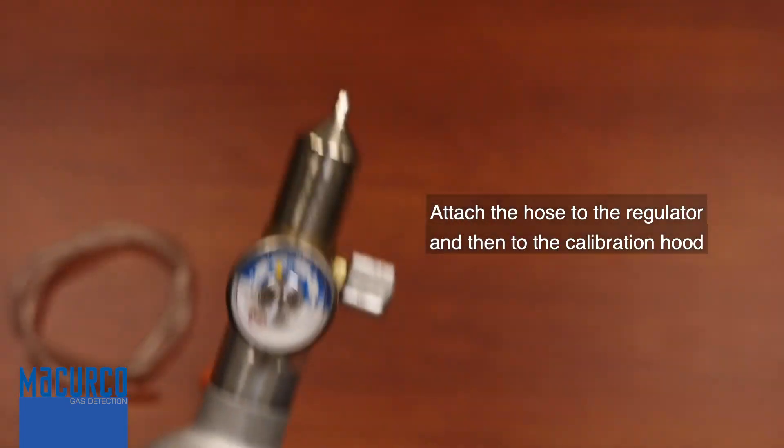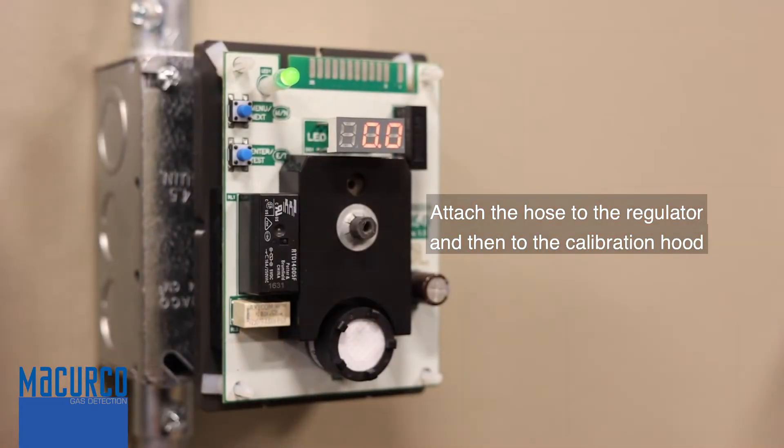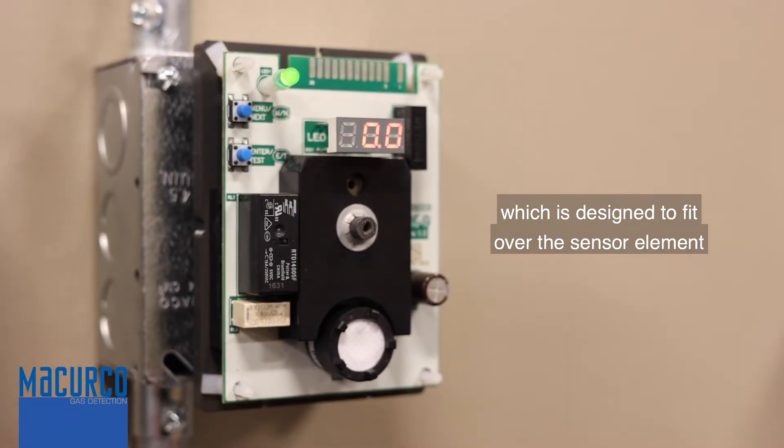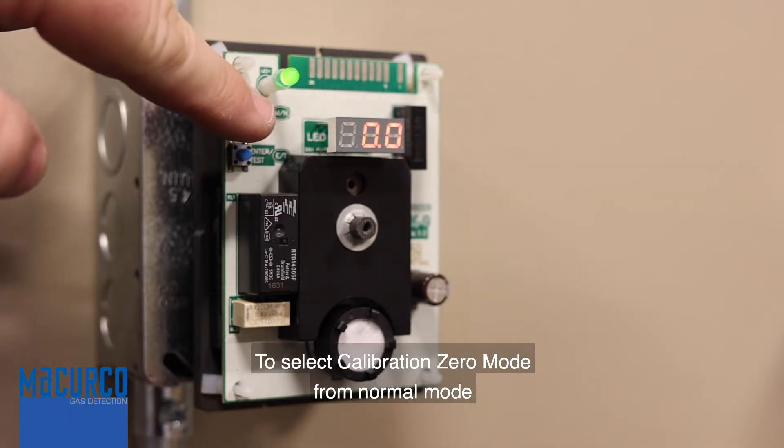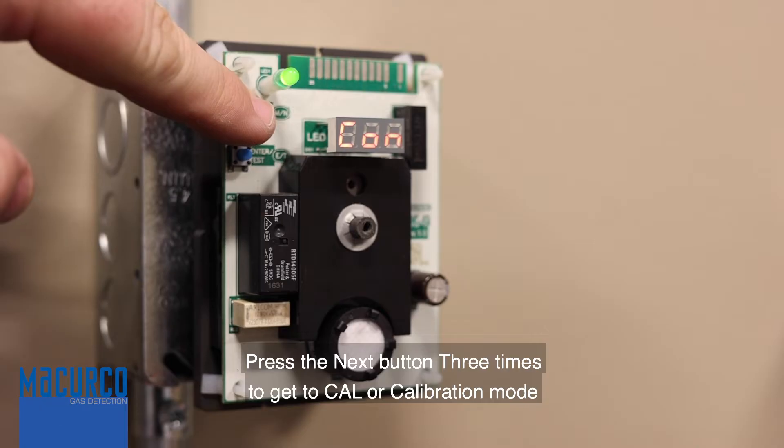Attach the hose to the regulator and then attach the hose to the calibration hood, which is designed to fit over the sensor element. To select calibration zero mode from normal mode, press the next button three times to get to cal or calibration mode.